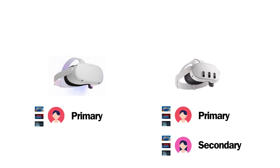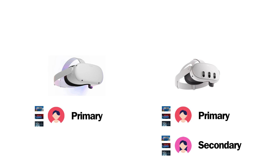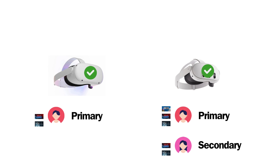Note, a user can only enable app sharing on one device at a time, so if app sharing was enabled on John's Quest 2, he would have to disable it first. And that's it. Trisha will now be able to download any app John has already purchased on the Quest 3. This includes the ability to play the same game as John at the same time, even playing together in a multiplayer game.